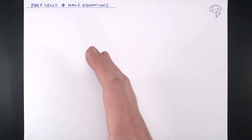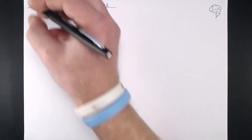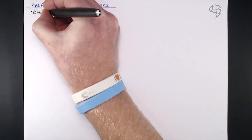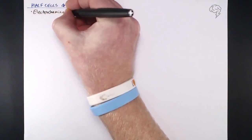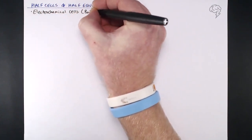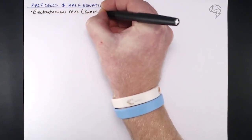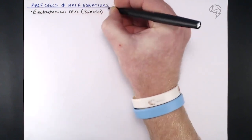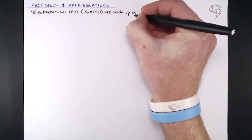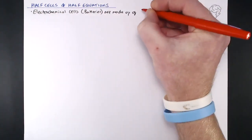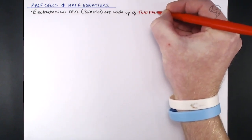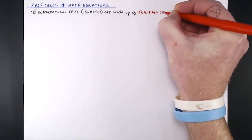Something we should all be familiar with are electrochemical cells or batteries. These electrochemical cells are made up of two half cells. What actually goes on in those two half cells — that's the basis of how they work.